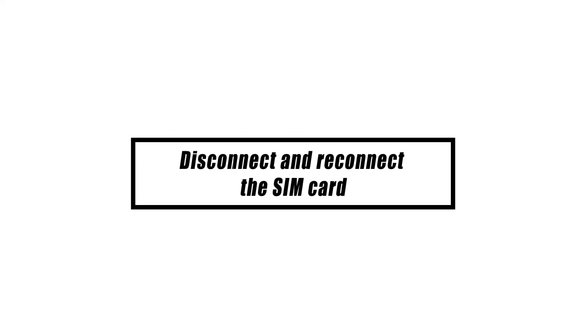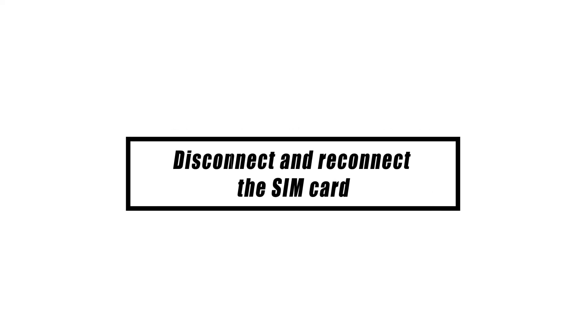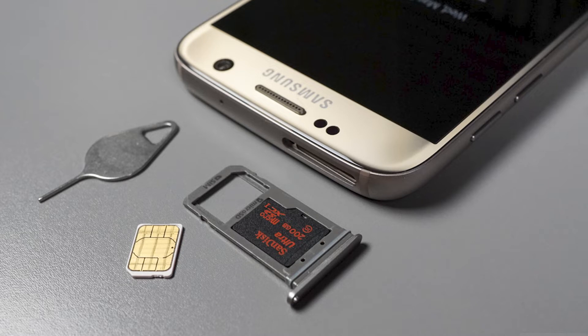Disconnecting the SIM card is another simple technique to resolve a signal issue. Just make sure to switch the phone off before removing and inserting the card. While you're at it, clean the card's copper contacts by simply wiping them with a clean, soft cloth.